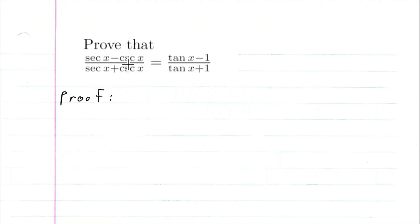This one looks a little bit more complicated, so let's use this. So we know secant x minus cosecant x over secant x plus cosecant x.